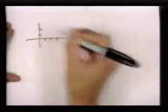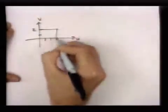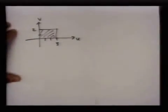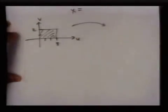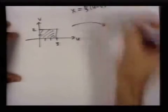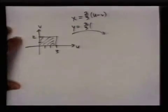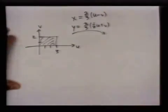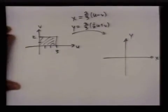So let me maybe write this separately. Basically, the transformation which sends x to 2 thirds u minus v and y to 2 thirds times 1 half u plus v turns this rectangle into the parallelogram shape from before.